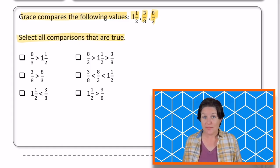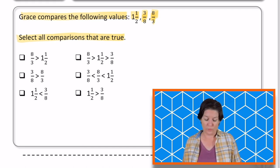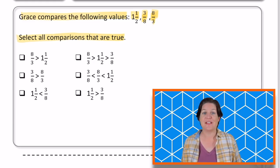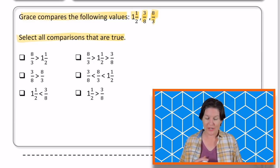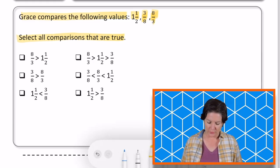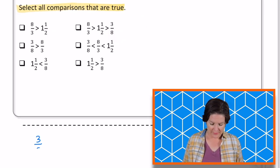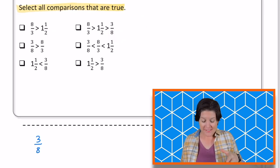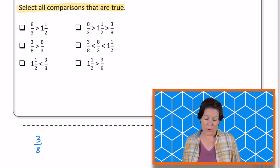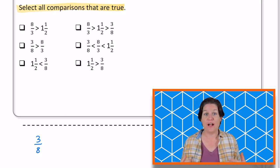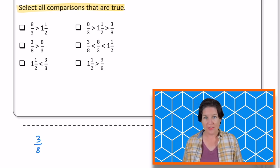So we have three different fractions: 1 1⁄2, that's a mixed number, 3 8ths, that's actually a fraction that's less than 1, and 8 3rds is a fraction greater than 1. So I know a little bit about these fractions already. The very first thing that I'm noticing is that 3 8ths is a fraction that is less than 1, while the other two, 1 1⁄2 and 8 3rds, are fractions that are greater than 1 whole. So I know that 3 8ths is going to be my smallest fraction.